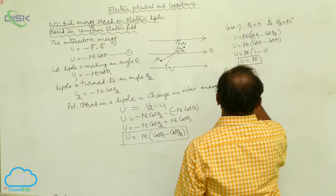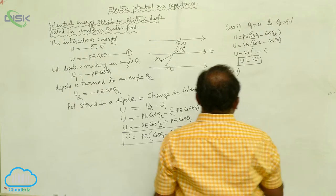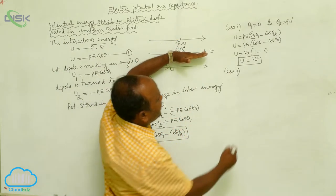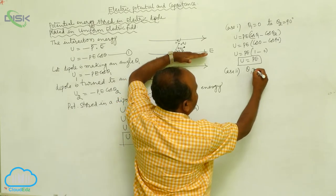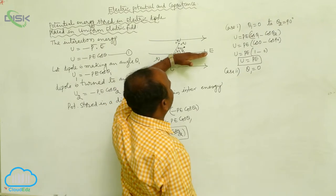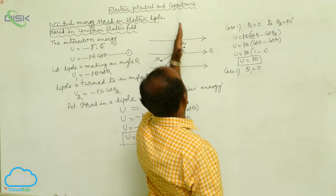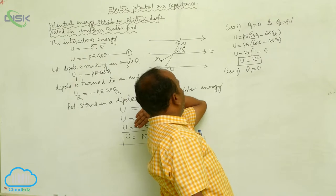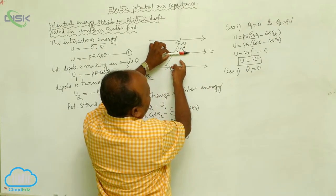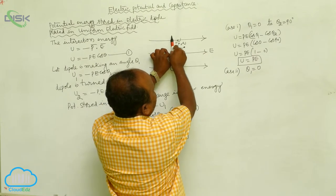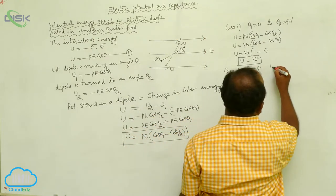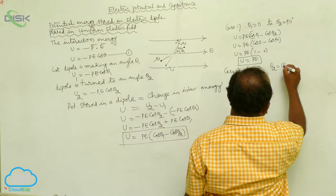In Case 2, when the dipole is initially parallel to the electric field with θ₁ = 0°, and it becomes anti-parallel — that is, rotated 180 degrees — therefore θ₂ = 180°.